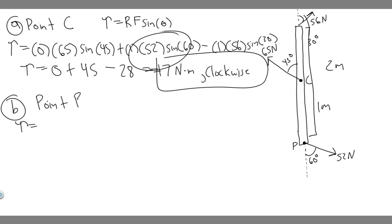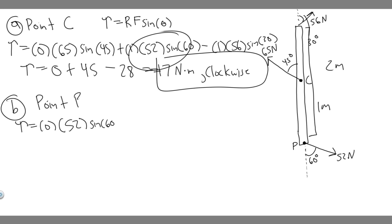Starting with point P — once again, it's going to be zero. The reason is because the distance from the force to the center is zero, so the radius is zero in this case. The force is 52 newtons times the sine of 60, but this whole thing is still zero.